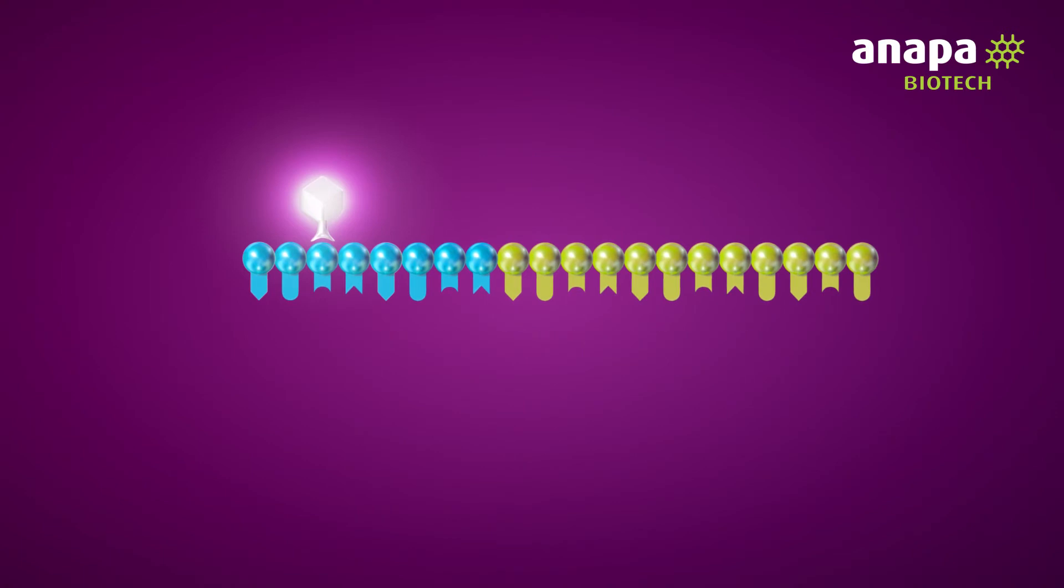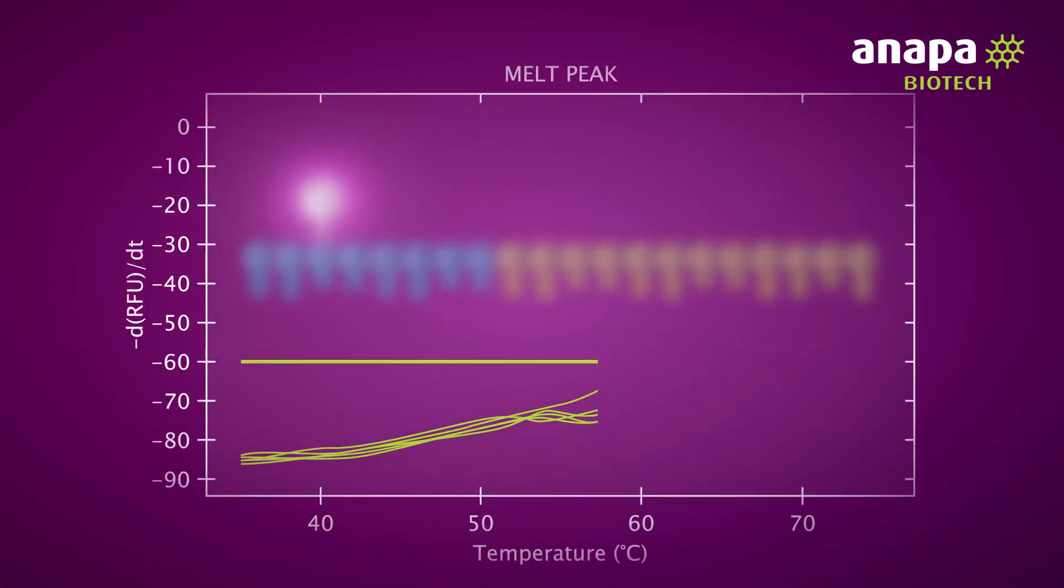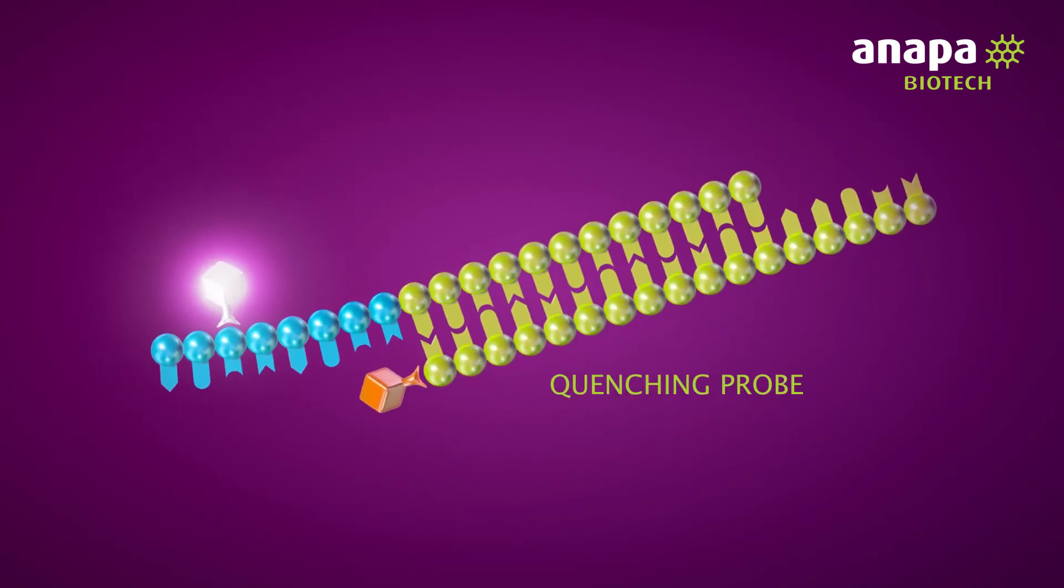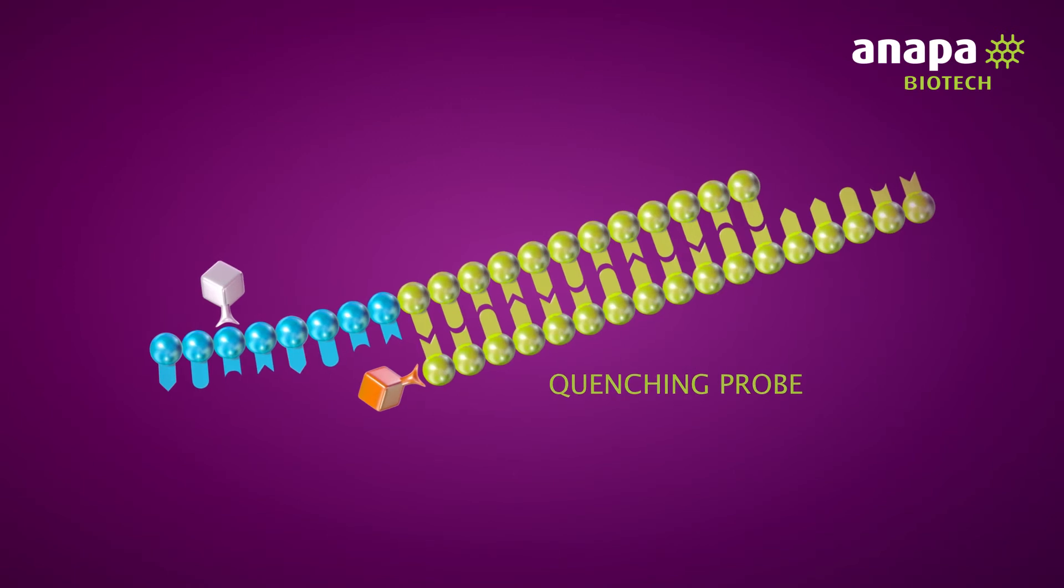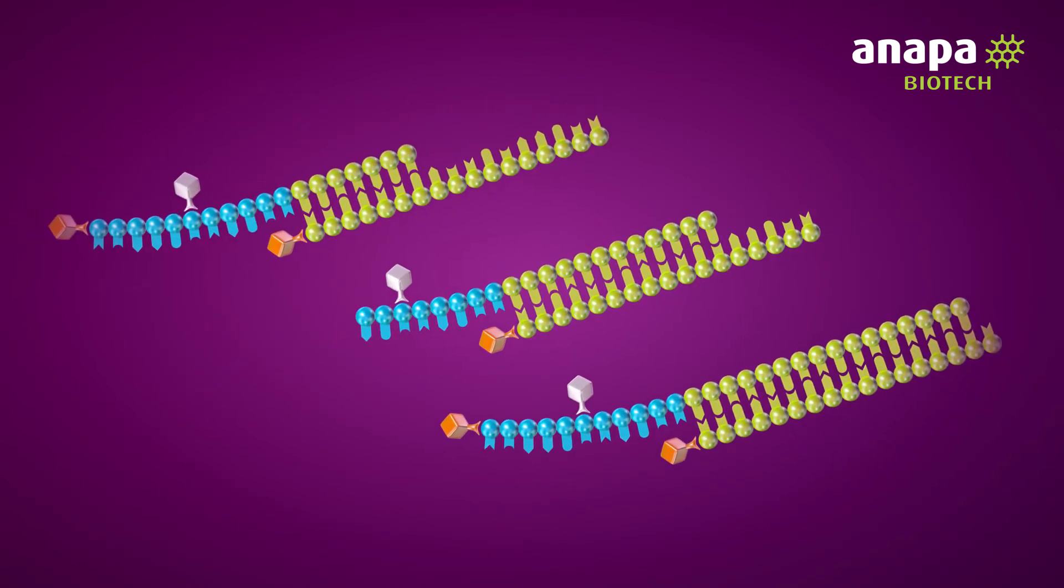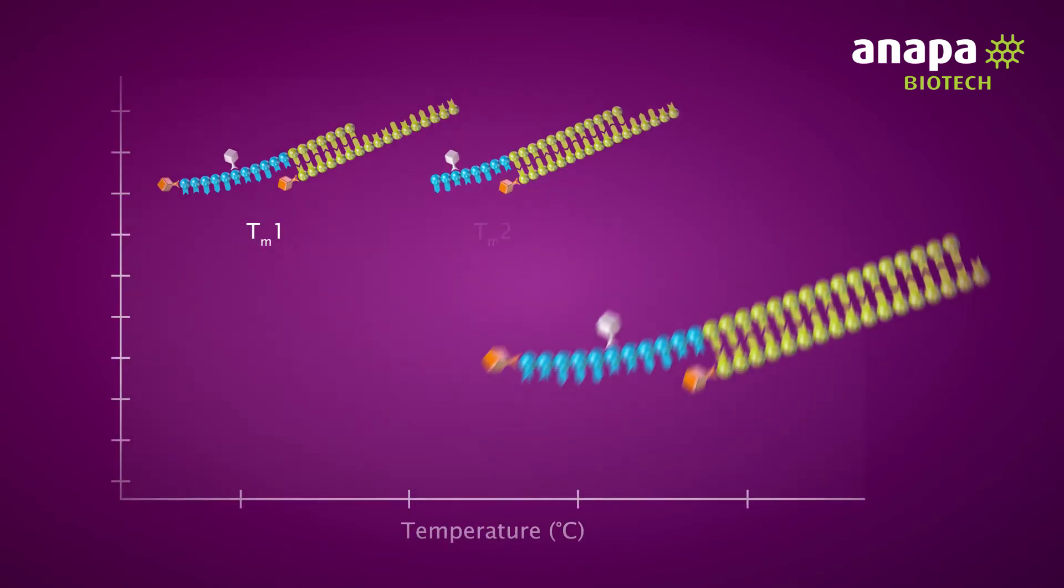Immediately following PCR, a melting curve analysis is performed where a common quenching probe hybridizes to the melting domain of each of the target probes. Each probe has a melting domain of a unique length. Therefore, each duplex will have a unique melting temperature.